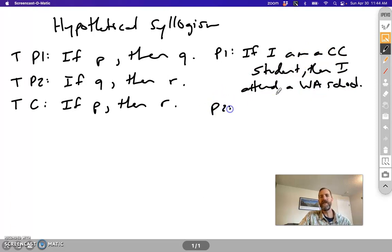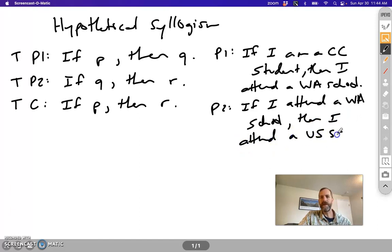If I attend a Washington school, then I attend a U.S. school. As Washington is, of course, a state inside the U.S., this antecedent here, attending a Washington school, does give us all that we need to infer the consequent that I attend a U.S. school.